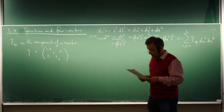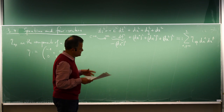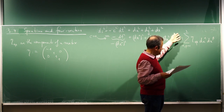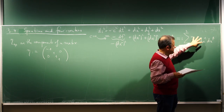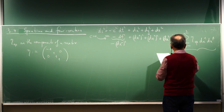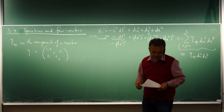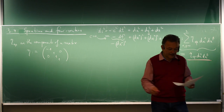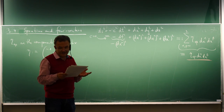From now on we will use the Einstein summation convention, which Einstein introduced because he found it awkward to write many summation symbols. By convention, whenever an index appears twice at different levels, that index is summed over from 0 to 3. So eta alpha beta dx alpha dx beta already implies summation. We will make use of it throughout the lecture.